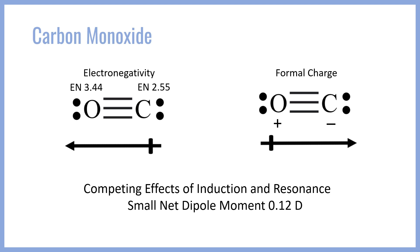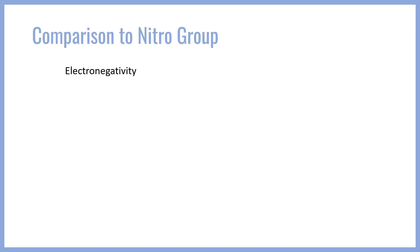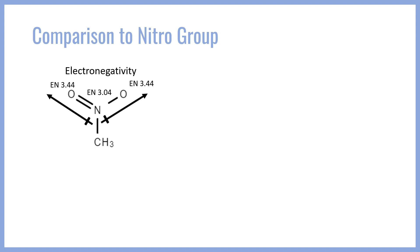To drive home how odd this is, let's compare to another molecule that also has inductive and resonance effects: the nitro group. In the nitro group, oxygens are double-bonded and single-bonded to nitrogen, and oxygen is appreciably more electronegative than nitrogen. Due to resonance, those two bonds are actually exactly equivalent — both look like 1.5 bonds. So the dipole moments for each bond are represented by equivalent arrows pointing away from nitrogen and towards oxygen, leading to a net electronegativity-based dipole for NO₂.